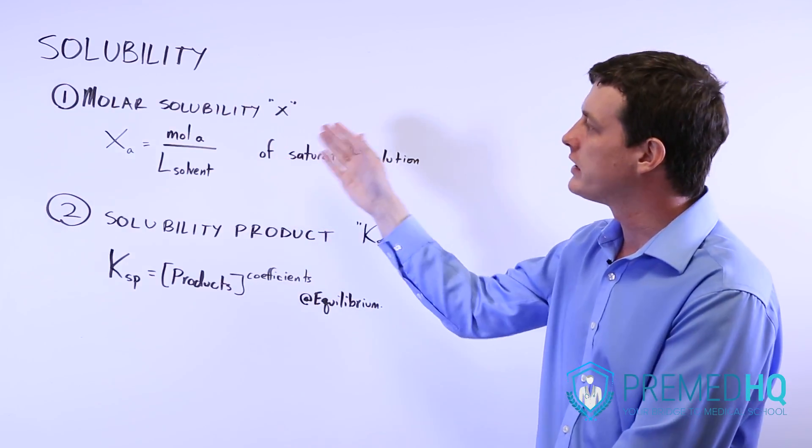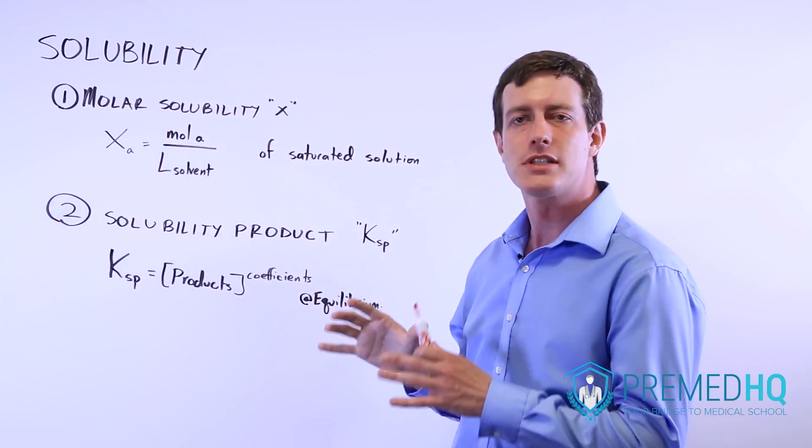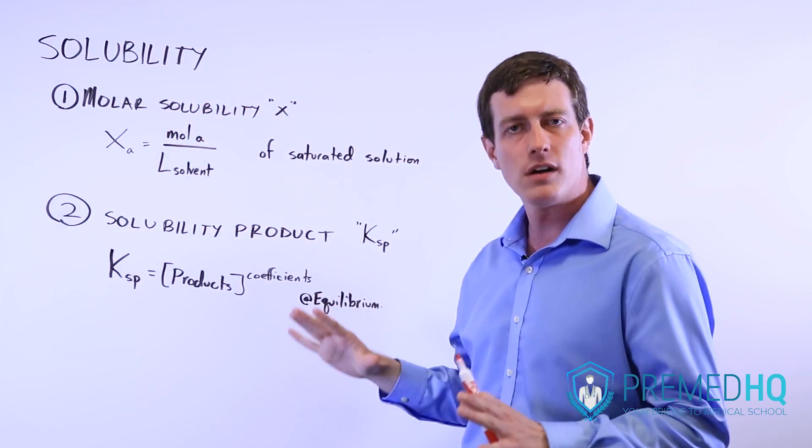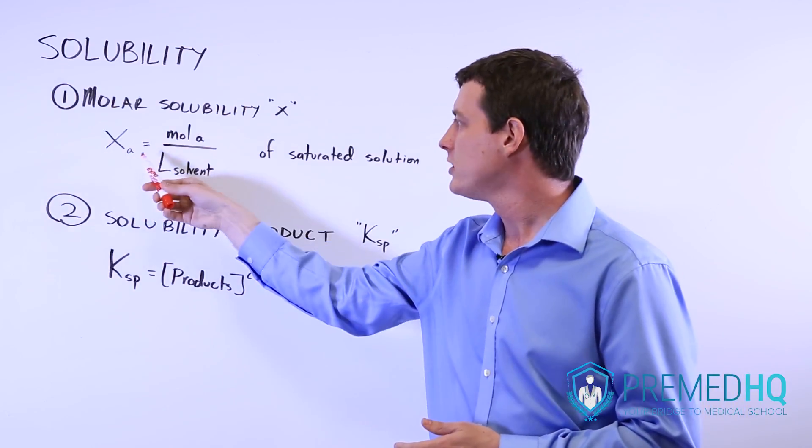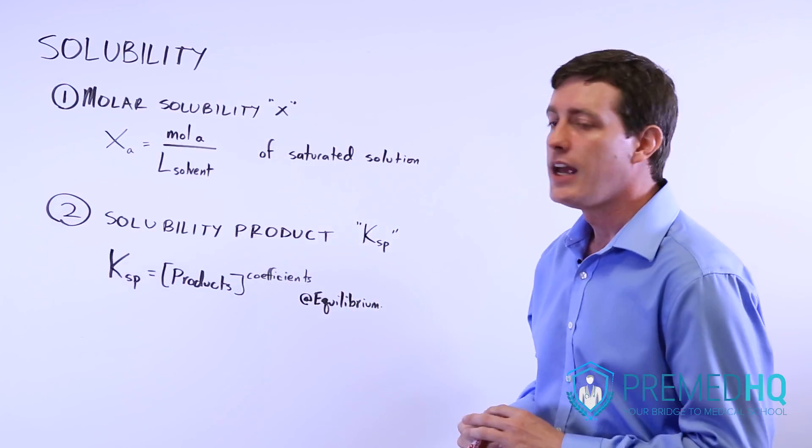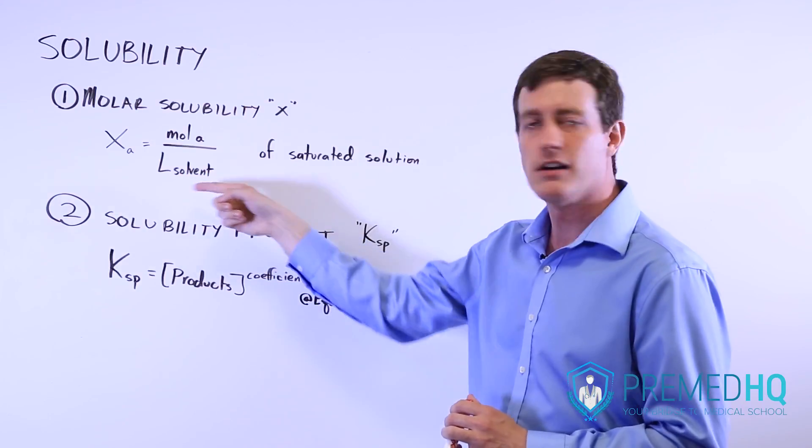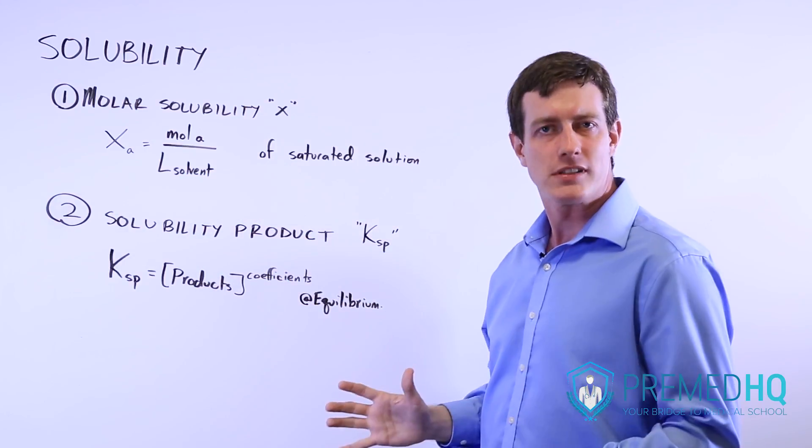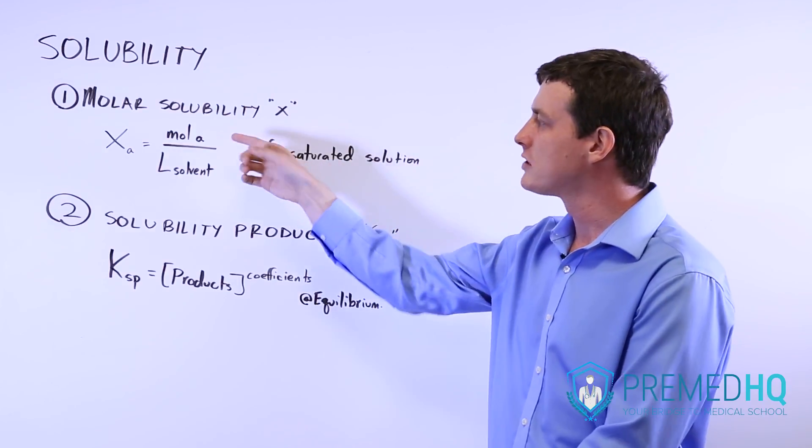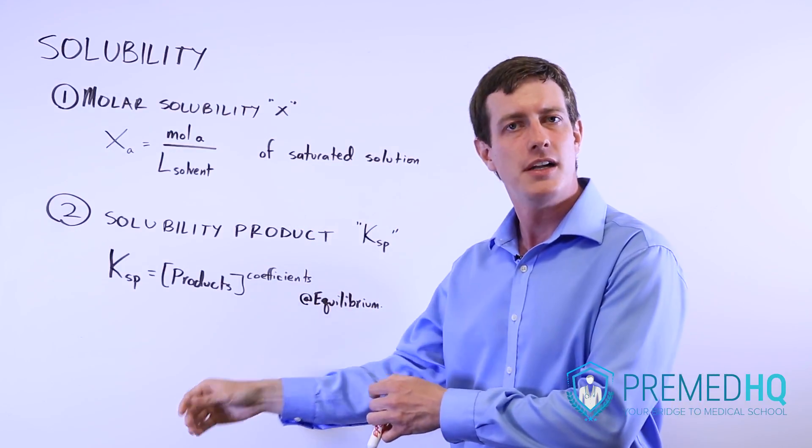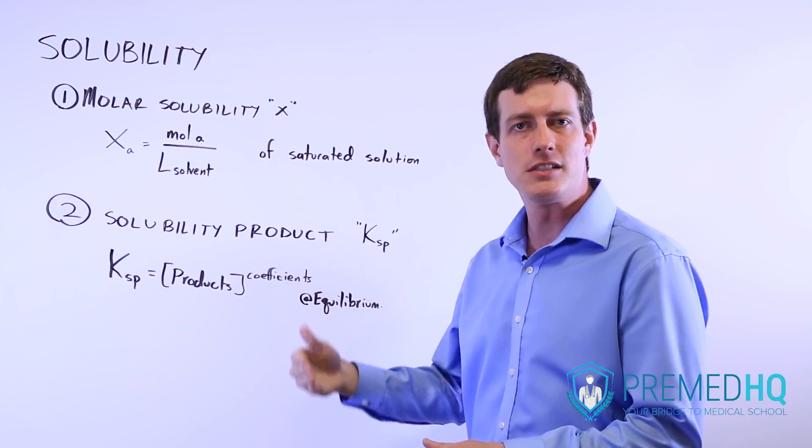The molar solubility says how much of the substance can you add before the solution is saturated. Here we have the molar solubility of A, X of A, and that's basically asking how much of this compound can you add per liter of solvent before it saturates. If this was NaCl, it would be the number of moles of NaCl that you could put into a liter of water before it became a completely saturated solution and began to precipitate.